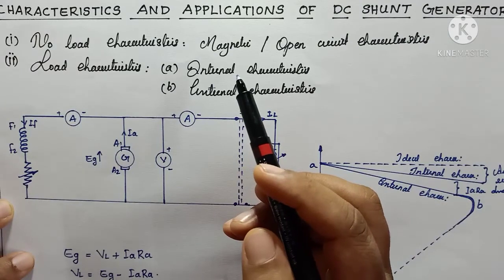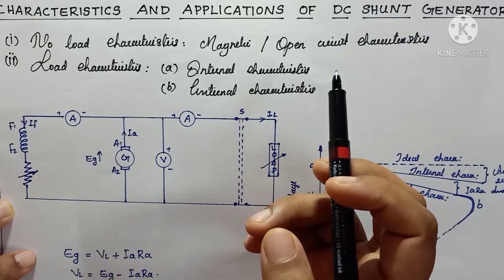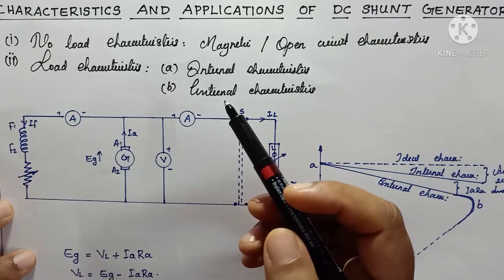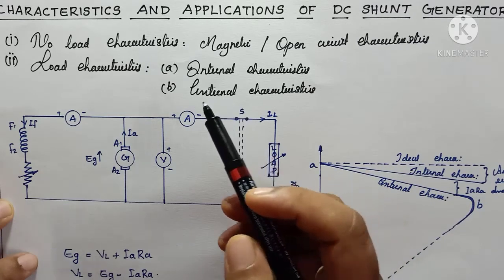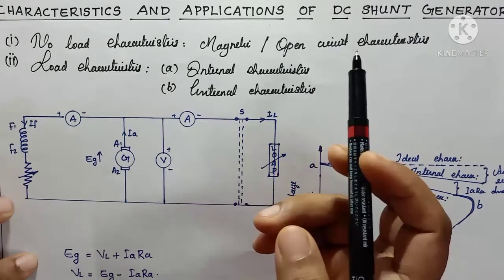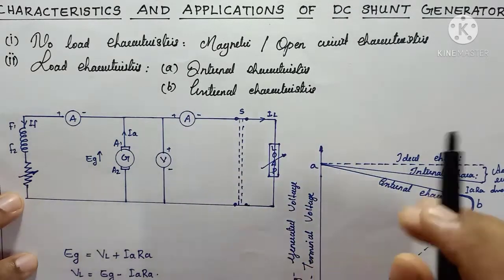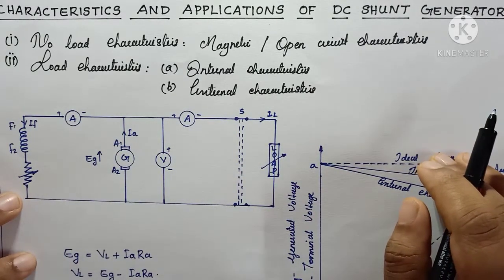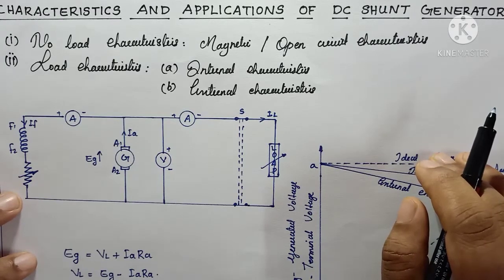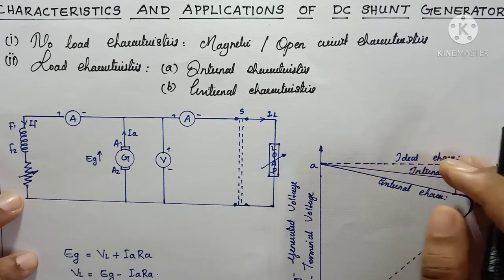For details of the open circuit characteristics of a DC shunt generator, you can check my previous video on the characteristics of a DC series generator — the OCC is the same. In the DC shunt generator, two important points are associated with the OCC: critical field resistance and critical speed.